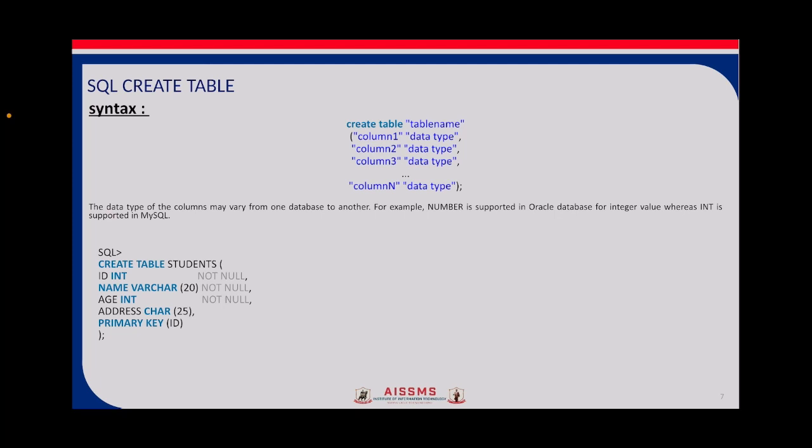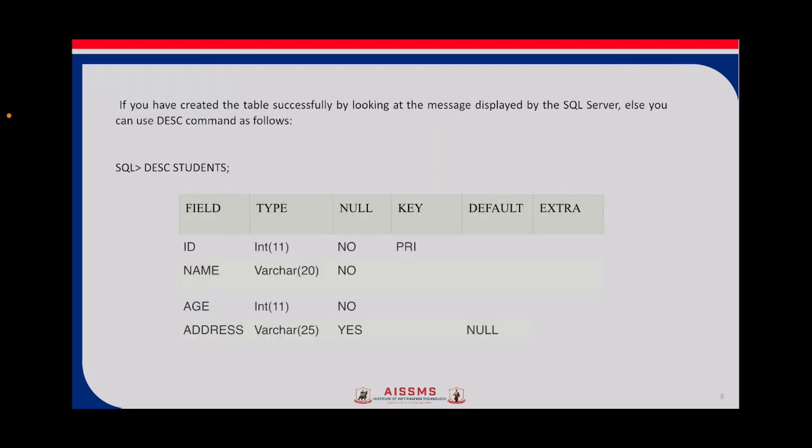ADDRESS is the next attribute with data type CHAR and I have given size as 25. I want to make the ID column the primary key — so you have to write PRIMARY KEY in brackets with ID, or alternatively you can write ID followed by PRIMARY KEY in front of it. In this way you can create the table.